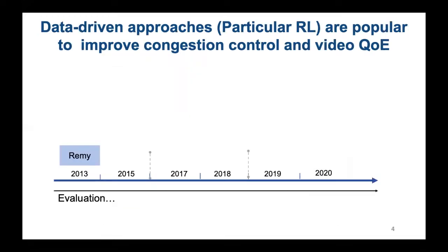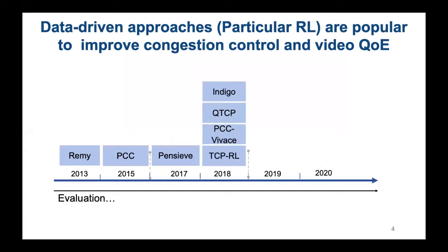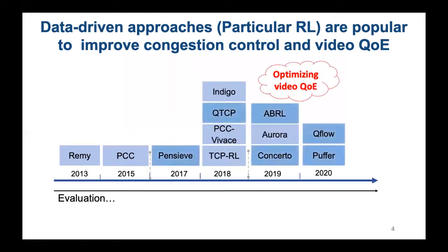Despite network evolution, the QoE of interactive video remains unsatisfactory, especially because of the wide use of HD videos. In recent years, many data-driven approaches, particularly reinforcement learning, have been proposed to maximize QoE by optimally matching video quality to instantaneous network conditions. Example systems include the PCC family, Pensive, Indigo, Aurora, Concerto, and the newest Pensieve, and so on.